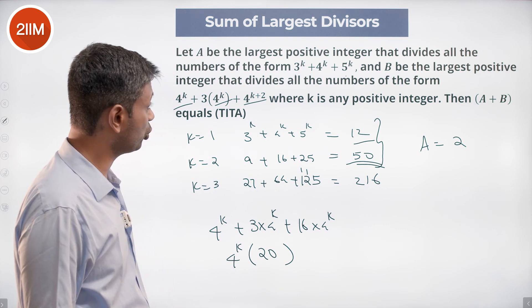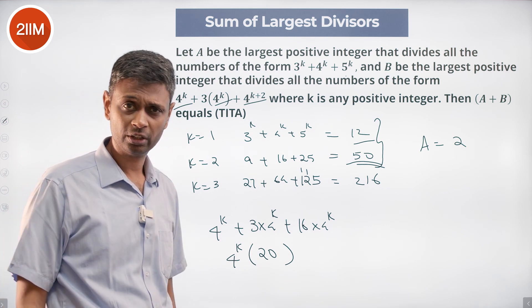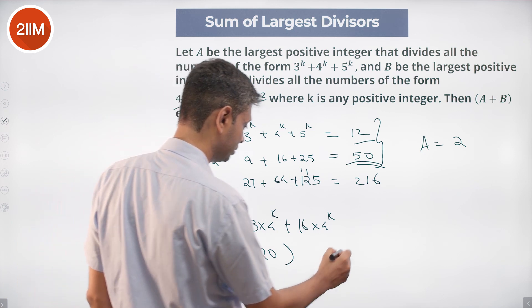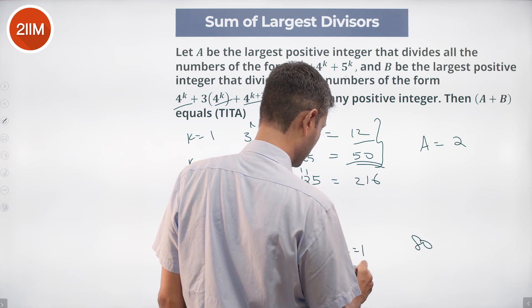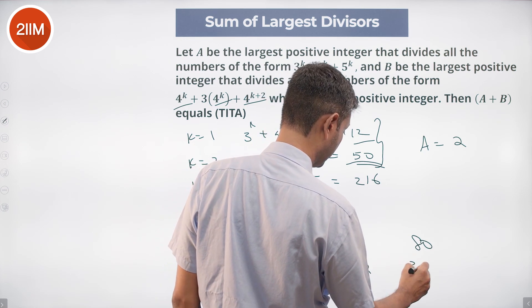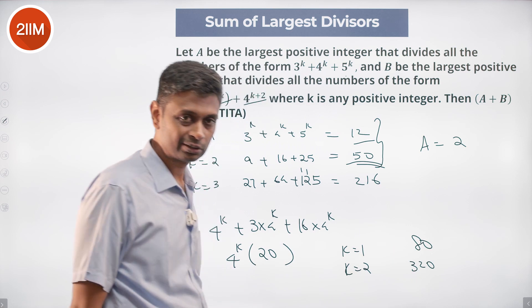Where k is any positive integer, k could be 1, 2, 3. So if we put k as 1, this number is 80. K is 2, this is 320.